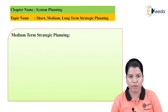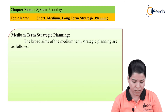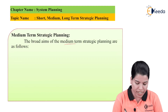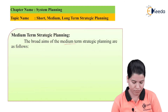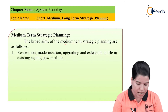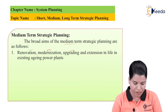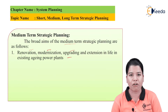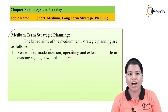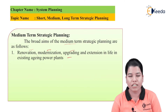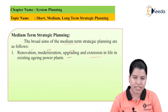Next is medium term strategic planning. The broad aims of medium term strategic planning are as follows. First is renovation, modernization, upgrading, and extension of the life of existing aging power plants. The power plants installed in older times are now facing problems of aging. So in medium term strategic planning, the main aim is to reconstruct these plants, upgrade them to the latest technology, and extend their life.